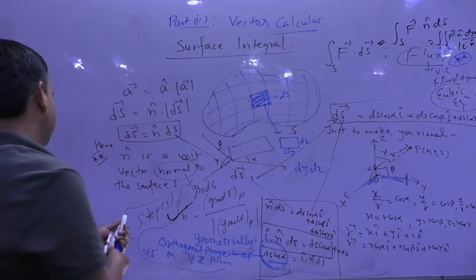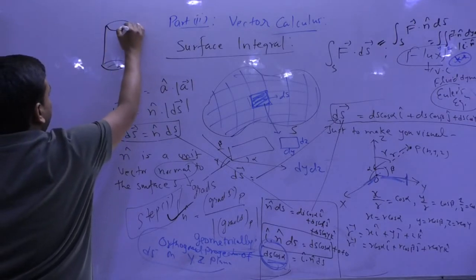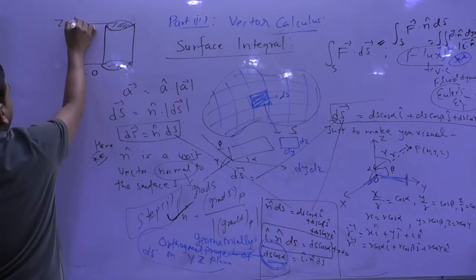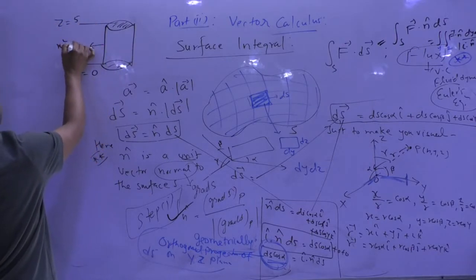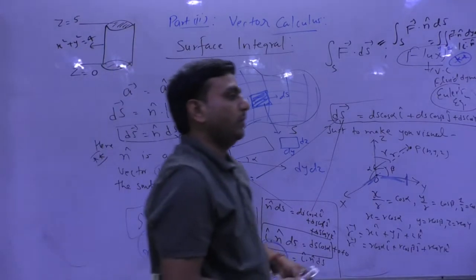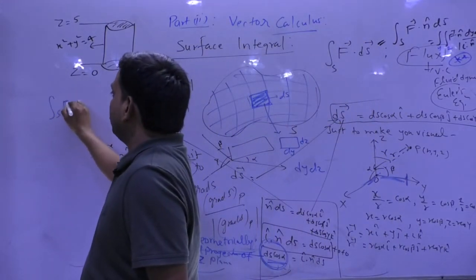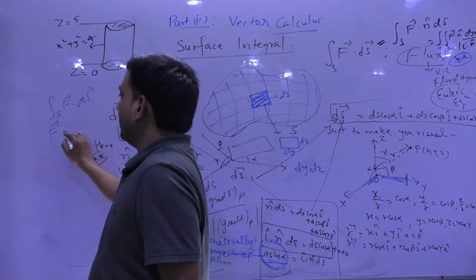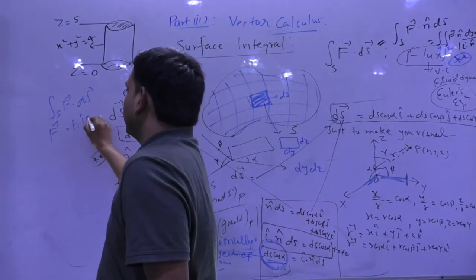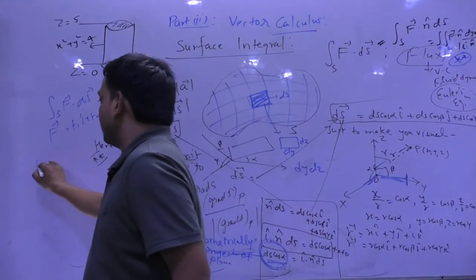I am again and again suggesting: please focus on orthogonal projection. For example, suppose you have a cylindrical surface: in the xy plane this is z = 0 and this is z = 5, and x² + y² = 4 (a circle of radius 2). They want you to calculate the surface integral of f vector dot ds vector over this surface. Step 1 is finding n̂ = grad S / |grad S|.